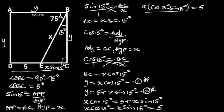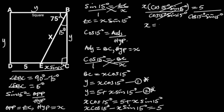Next, let's divide through by (cos 15 degrees minus sine 15 degrees). The (cos 15 degrees minus sine 15 degrees) will cancel out, and we are left with X is equal to 5 over (cos 15 degrees minus sine 15 degrees).